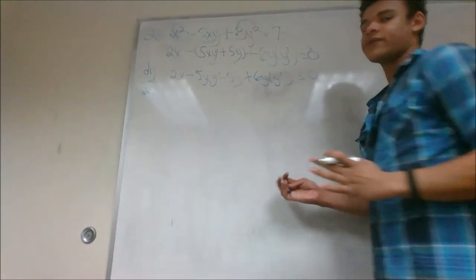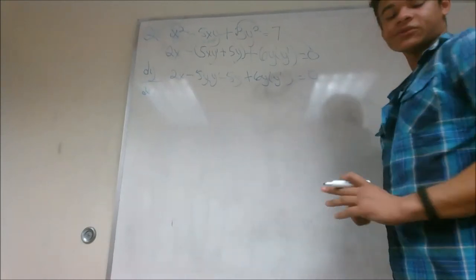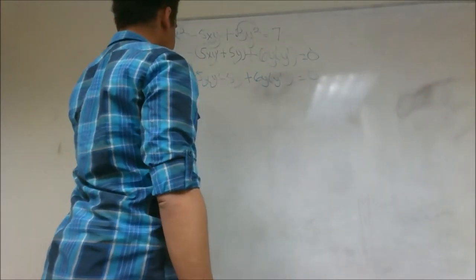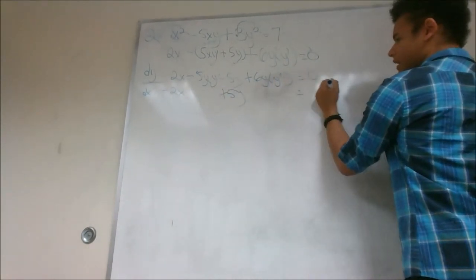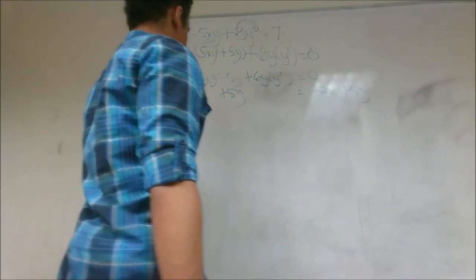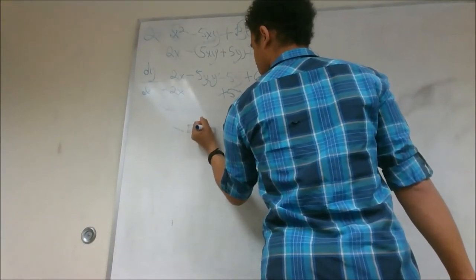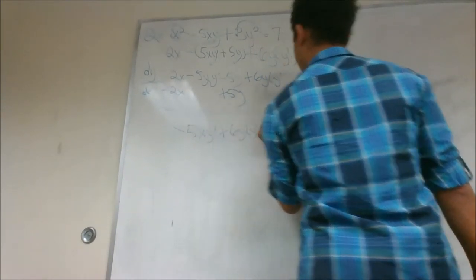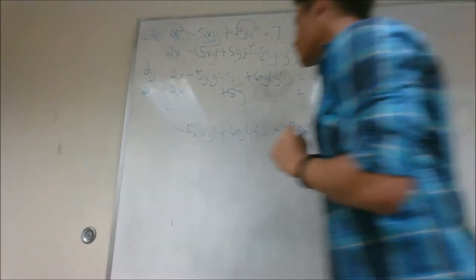Now we have to clean everything up. We need to follow our second step, which is to get y prime by itself. So we start by subtracting all the things that don't have y prime in it. So we need to subtract the 2x and we need to add 5y. So we end up with negative 5xy prime plus 6y y prime equals negative 2x plus 5y.